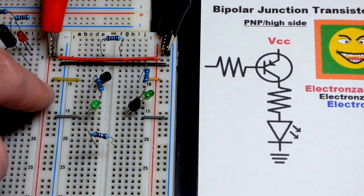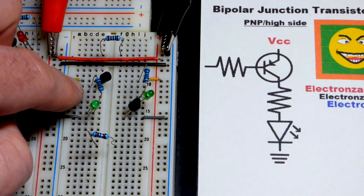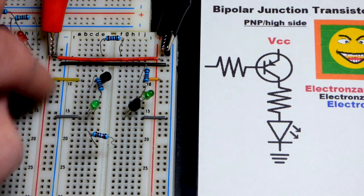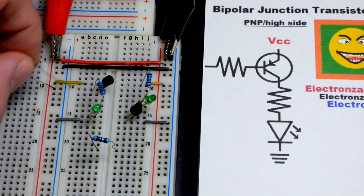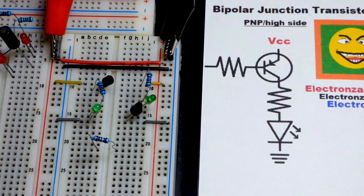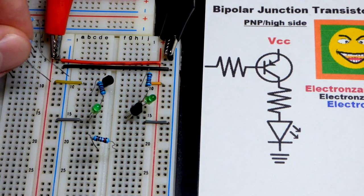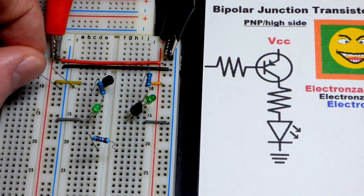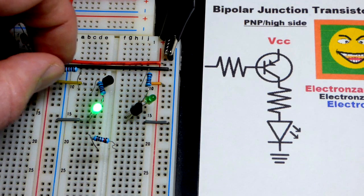So with the NPN bipolar junction transistor, we had to give it a higher signal than emitter. But that won't work with the PNP. If I go to the positive rail, it just holds it off. And if it's floating, it just stays off. We have to go to the negative rail to turn that on.